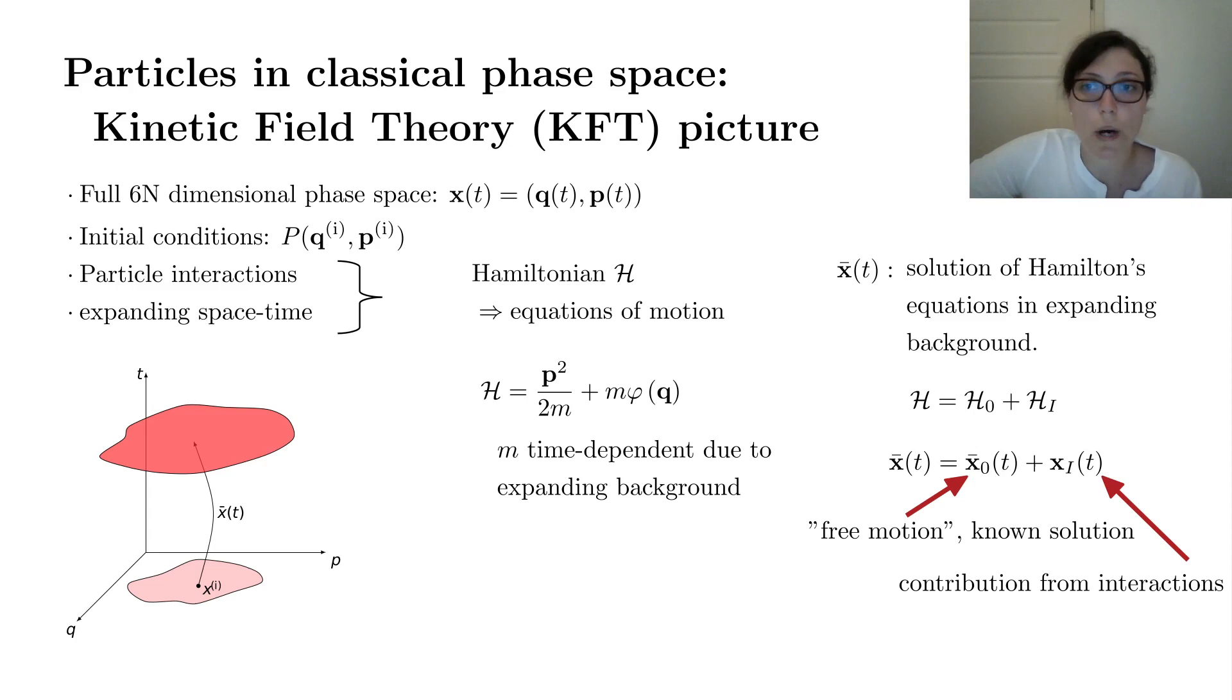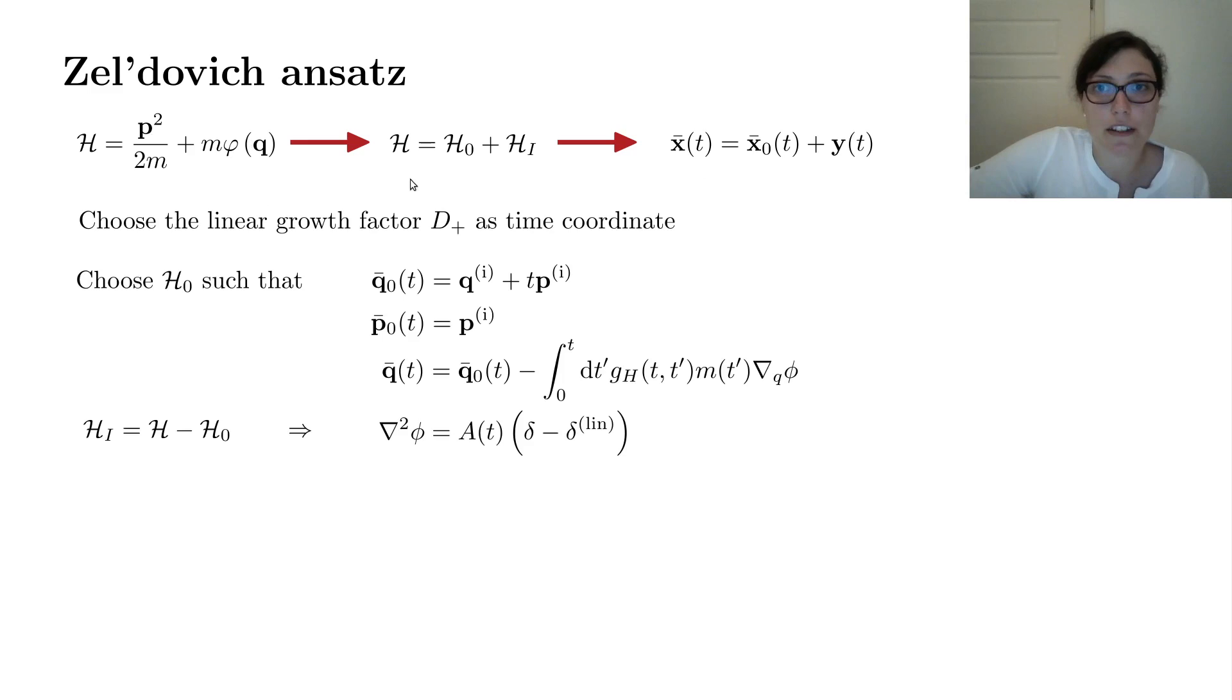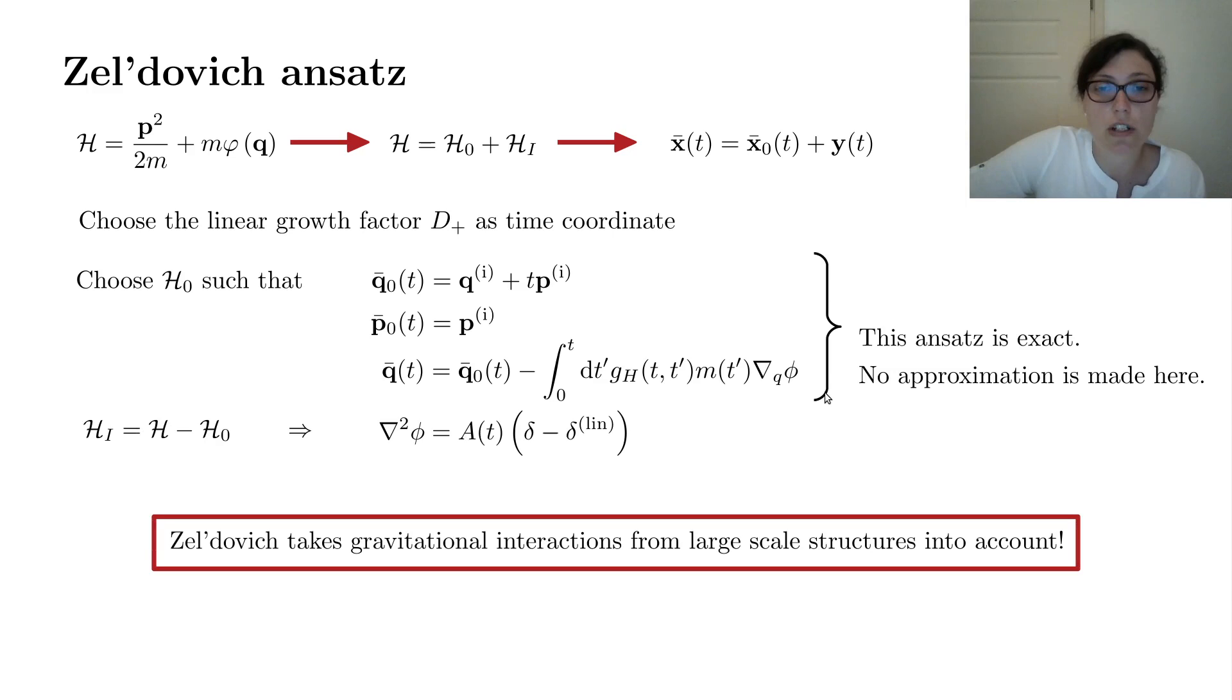The question is what are smart splits? A smart split is given by the Zeldovich Ansatz. So we go from our full Hamiltonian, split it up to get a split in the particle trajectories. The first thing to do is that we choose the linear growth factor d_plus as a time coordinate, and we choose now the free Hamiltonian such that the particle trajectories are simply given by ballistic trajectories. With this, we find that the full particle trajectories are given by the Zeldovich trajectories, minus a term that is governed by a potential, which is itself sourced by the difference of the density contrast and the linear density contrast. Now note that this Ansatz is exact, so no approximation has been made here in this split. By this potential, we see that Zeldovich already takes gravitational interactions from large-scale structure into account.